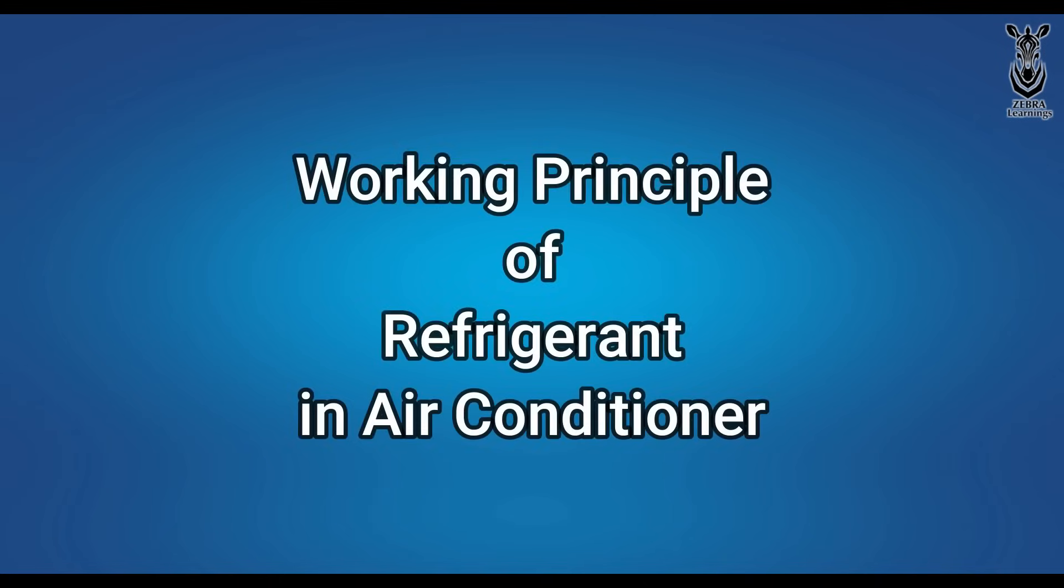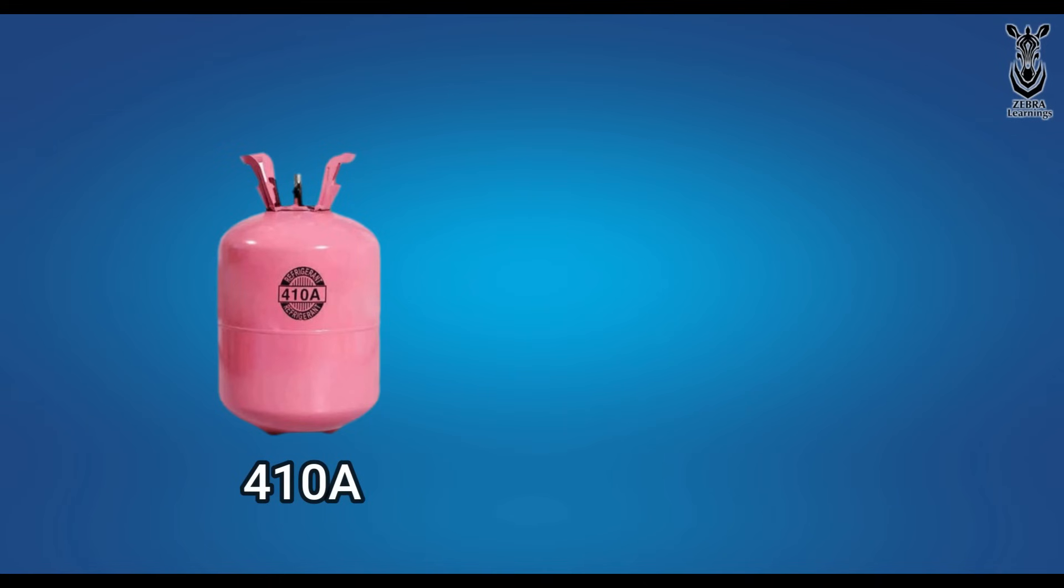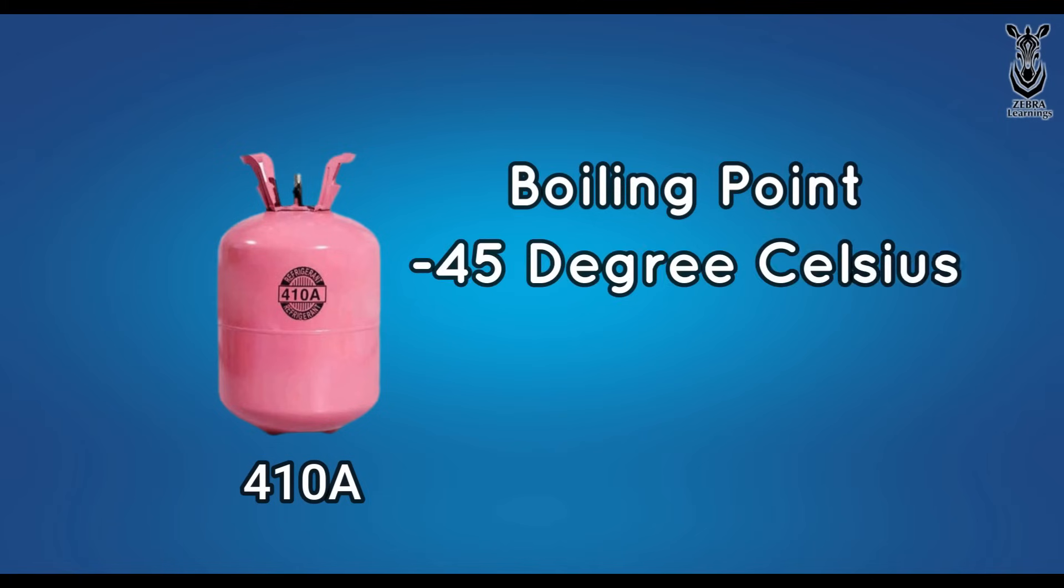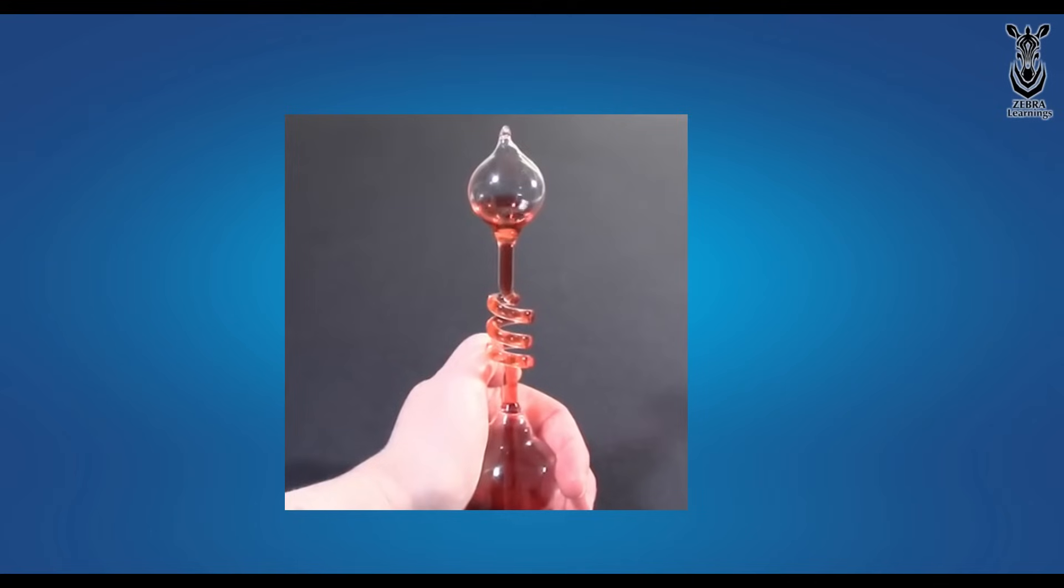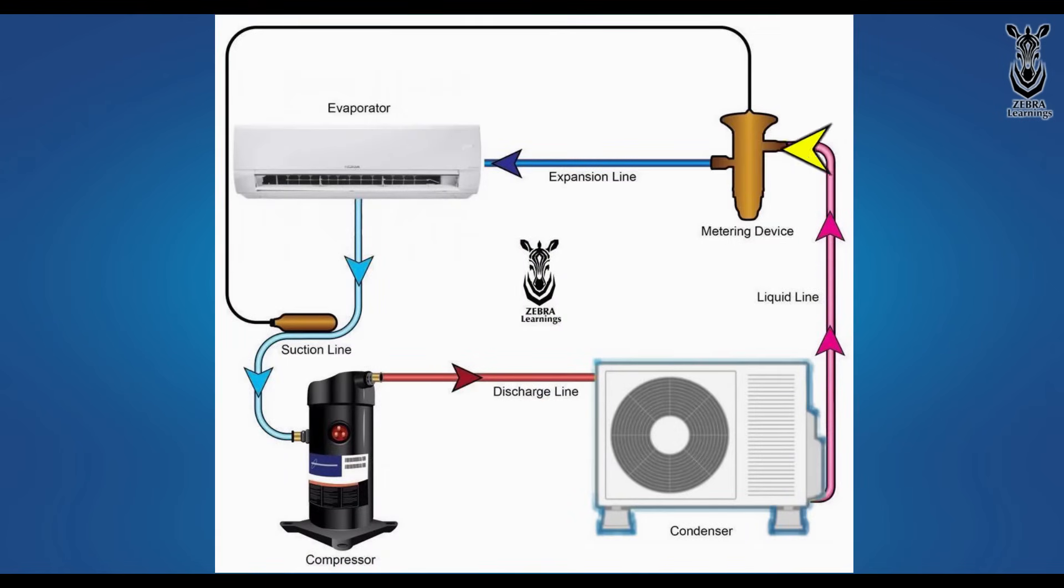Now, let's see how refrigerant works in an AC unit. The boiling point of R410A refrigerant is minus 45 degrees Celsius. That means it starts to boil at minus 45 degrees Celsius. If we put it in our hand, it will start boiling at the temperature of the hand. This refrigerant travels through all the equipment in the AC unit.